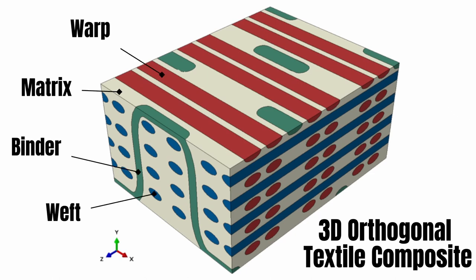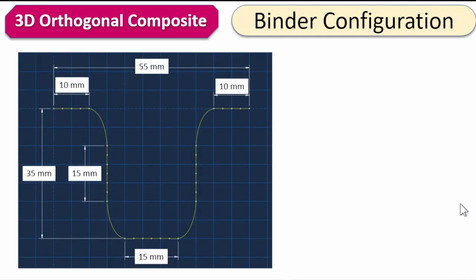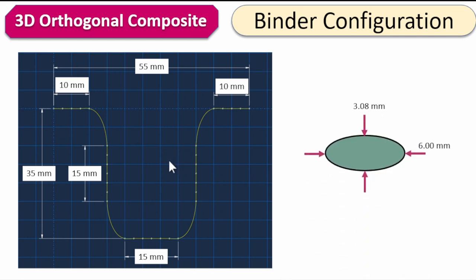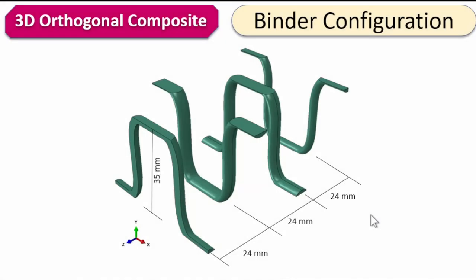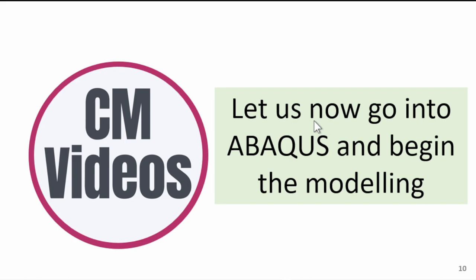Looking in more detail at the configuration of the binder: the first thing we're going to do is to sketch it. It will have a classic 3D orthogonal shape with specific dimensions we'll use in the design. The cross-section of the yarn is elliptical. By the time we assemble, we'll have four binder yarns, and they have to be inverted — one inverted relative to the other — because the essence of this is to hold the system in place so that it stays intact. Let's now go into Abaqus and begin this modeling.